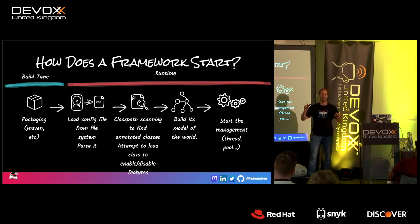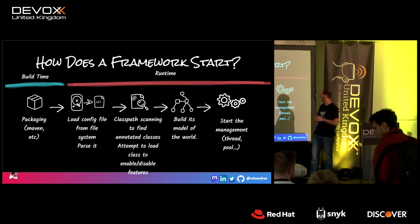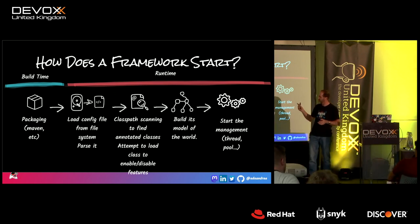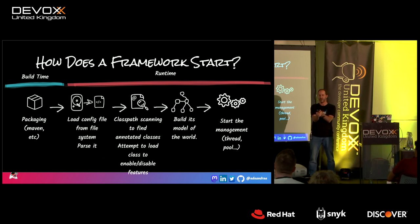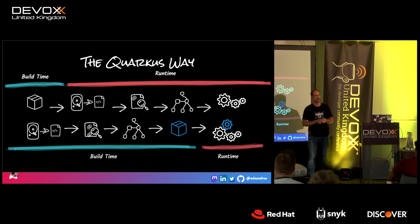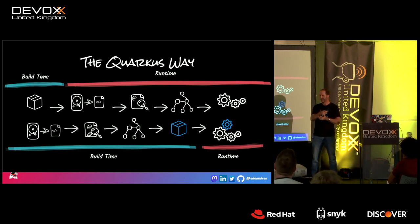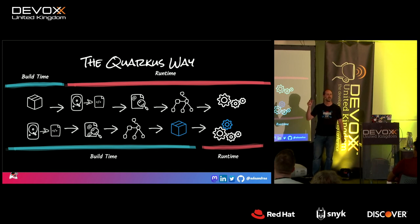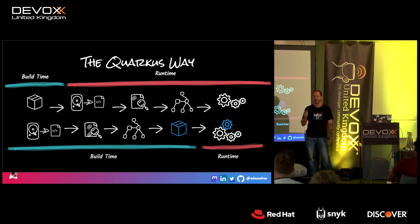Quarkus does all that class path scanning, annotation scanning, and property file processing at build time and then throws it away once it initializes everything. This is the key separation: your Quarkus extension has two finite pieces — stuff that happens at build time which never makes it into the runtime classpath, and stuff that your application needs at runtime. Some properties are only read at build time and can't be changed at runtime, which is a bit of an adoption shift.